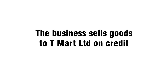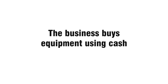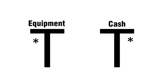The business sells goods to T Mart Limited on credit: debit debtor T Mart Limited, credit sales. The business buys equipment using cash: debit equipment, credit cash.